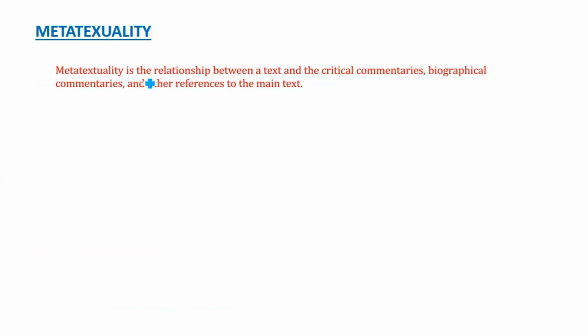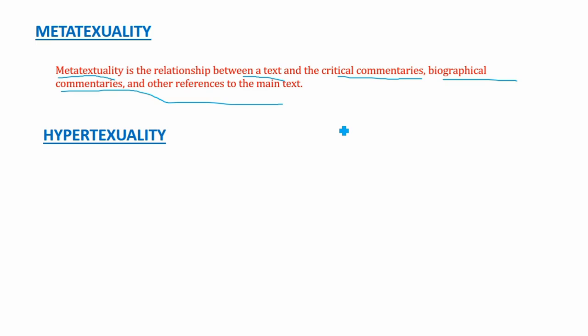The fourth type is metatextuality. Metatextuality refers to the relationship between a text and its critical commentaries, biographical commentaries, and other references to the main text. For example, when an audience member, a contemporary writer, or a critic comments on a particular work — according to their ideology — or writes biographical notes about it, that commentary is called metatextuality.